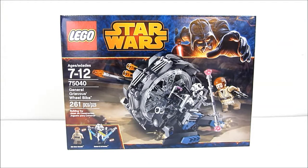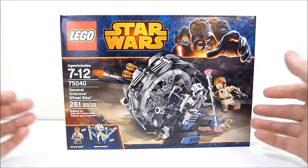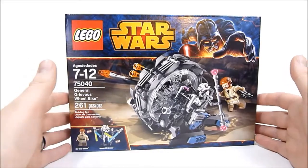What's going on YouTube, Rob again and today we're going to be taking a look at Lego Star Wars set number 75040, General Grievous' Wheel Bike. This set has 261 pieces and retails for about $25.